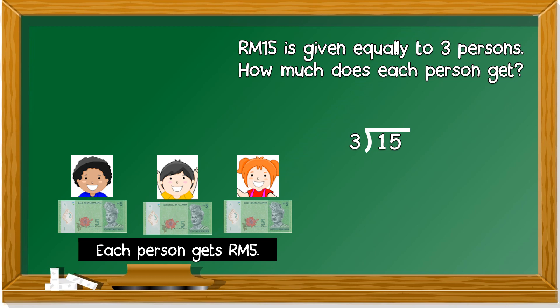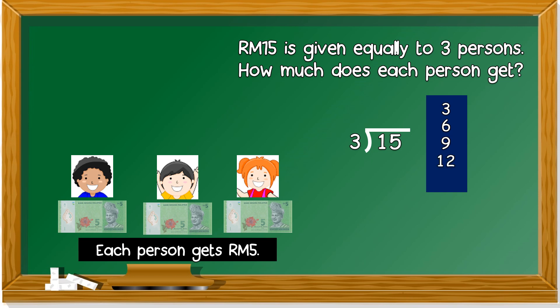We can do it in the division form: 15 divided by 3. Still remember your multiplication of 3? The song of 'I love you, you love me.' So it's 3, 6, 9, 12, 15. We got up until 15. So 15 divided by 3 — how many fingers are open? 5. So 15 ringgit divided by 3, each person gets 5 ringgit.